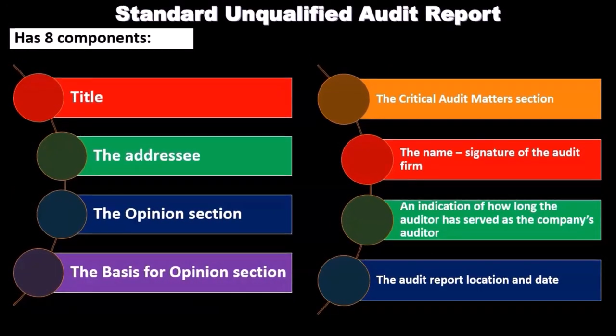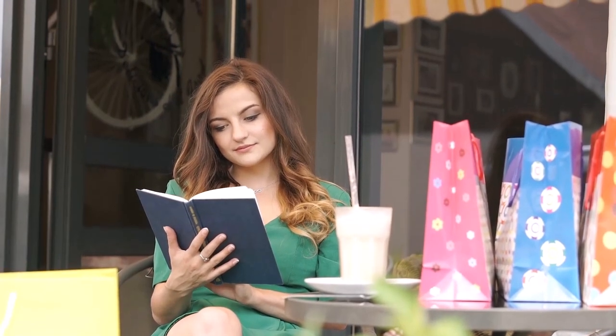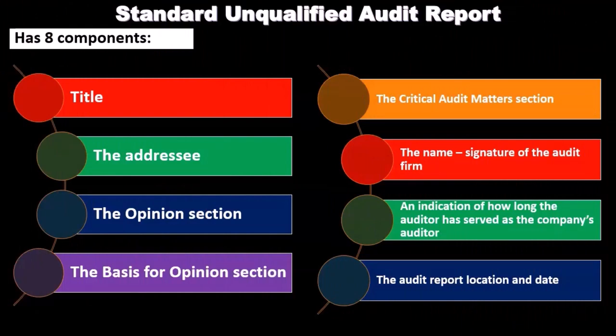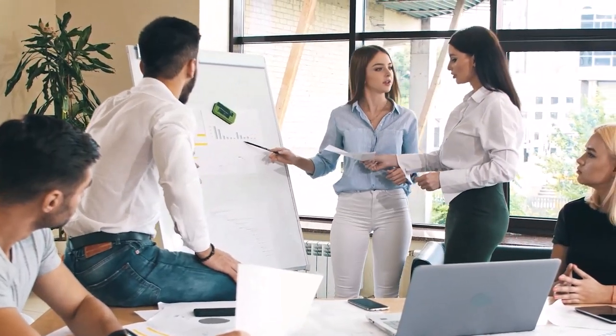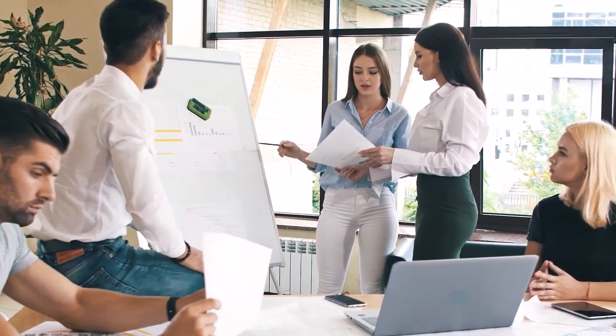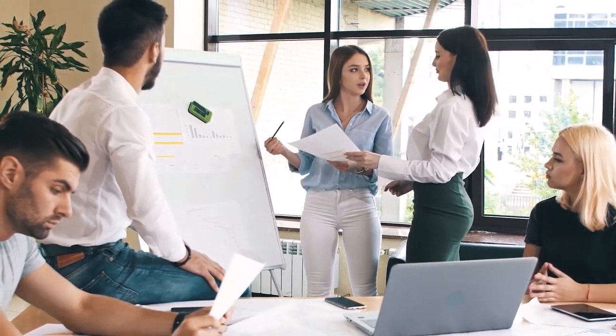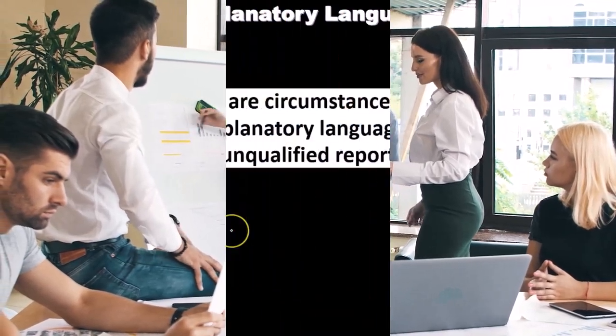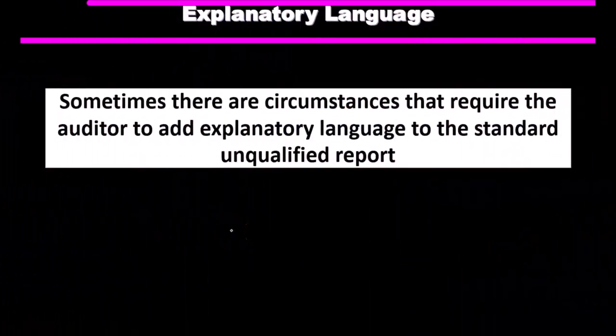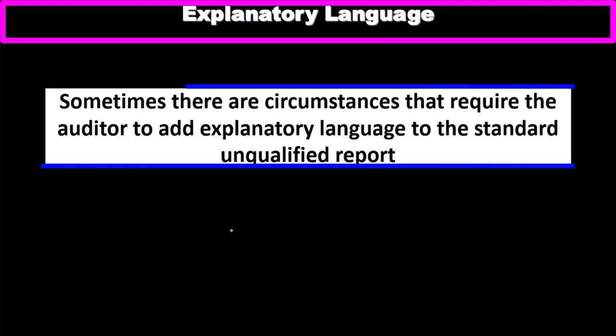We're going to go through an example of a standard audit report. This can be a bit tedious as we actually read through it — normally I wouldn't read through paragraphs of information in a presentation format — but the report is a very standardized type of setup. Although there are some deviations in formatting, it is very systematic, so it's a good idea to go through and read the basic template to get an understanding of it.